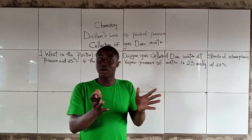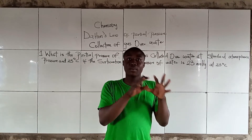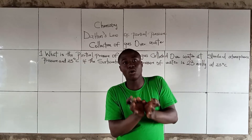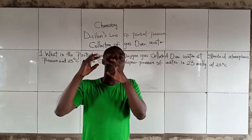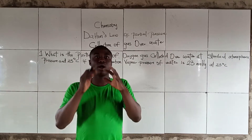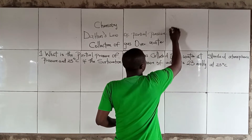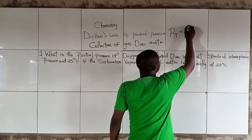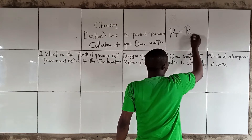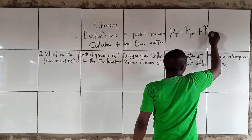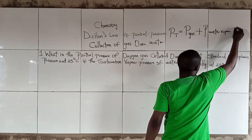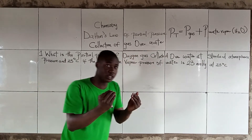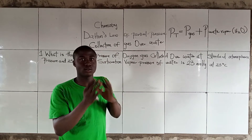When a gas is collected over water, it simply means that the total partial pressure of that gas is equal to the sum of the partial pressure of the gas and the partial pressure of water vapor, H₂O. This is the formula for solving questions pertaining to collection of gases over water.